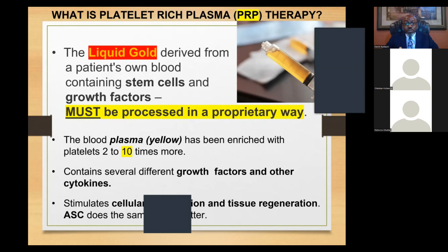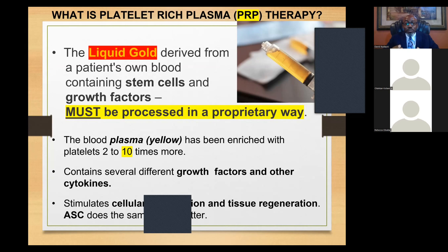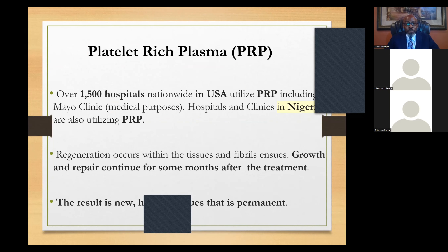If the PRP has only been enriched about two times the standard, the efficacy is very small — that's why you hear some friends saying PRP works and others saying it does not. How it is prepared is important. Platelet-rich plasma contains growth factors and cytokines, which are what make the cells in the body multiply and make tissue regenerate. Adult stem cells do the same, even better than PRP.